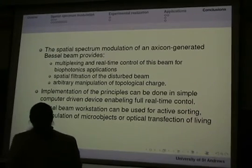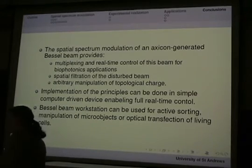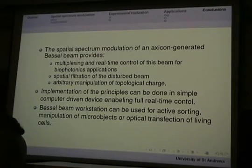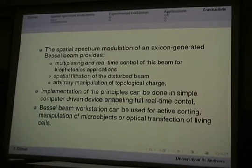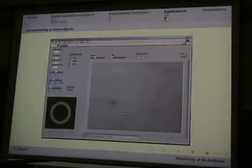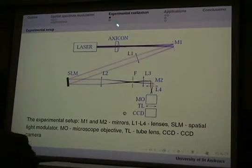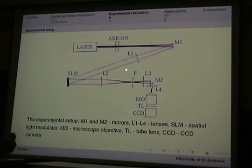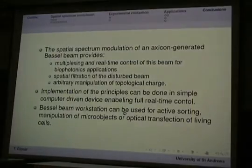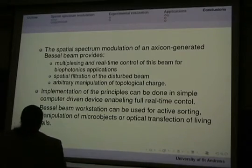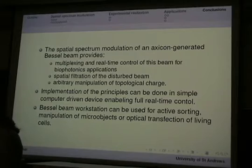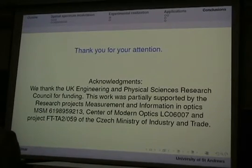So, as I showed, spatial spectral modulation of axicon-generated Bessel beams can provide multiplexing and runtime control of the beams. We can enhance the quality of the beam by spatial filtration and we can arbitrarily manipulate topological charge. So the implementation is pretty straightforward and there is just one thing I forgot. If you look at this setup, the only thing you need to change if you want to obtain classic holographic tweezers is to replace the axicon with a beam expander. So, if you already have holographic tweezers, you can easily convert into this setup. So we've also shown some applications for sorting, manipulation of particles, and poration of living cells. So, thank you very much.